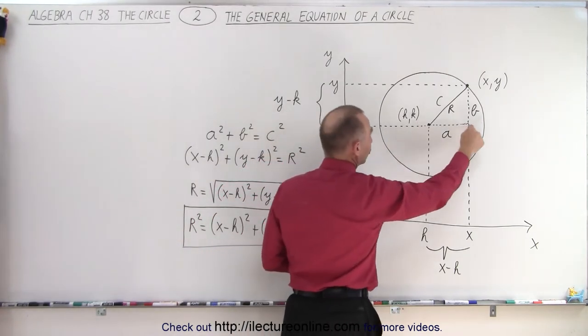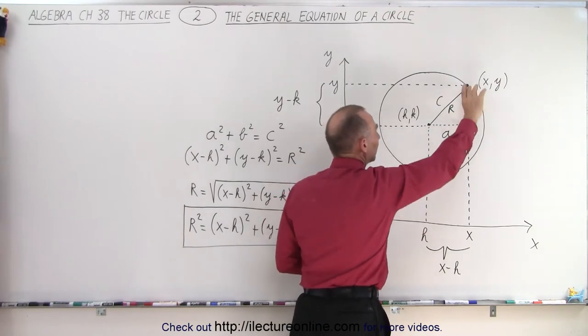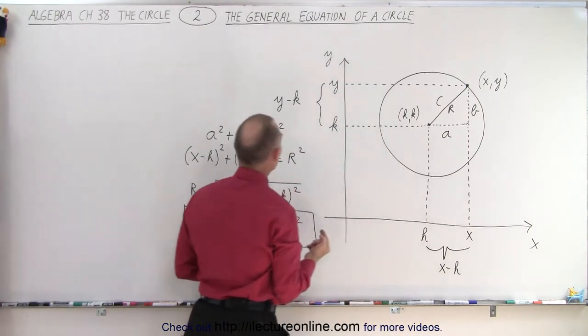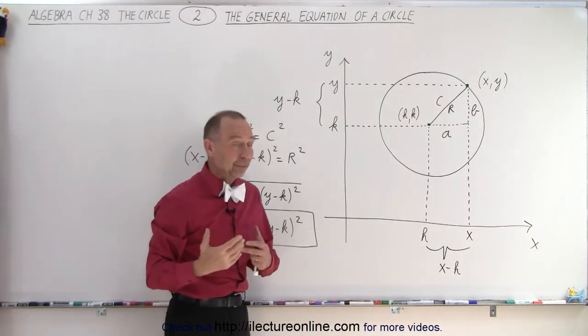Now if we draw a triangle right here, again we'll label this distance as equal to a, this distance equal to b, and the hypotenuse equal to c, we then know that a squared plus b squared equals c squared. That's the Pythagorean theorem.